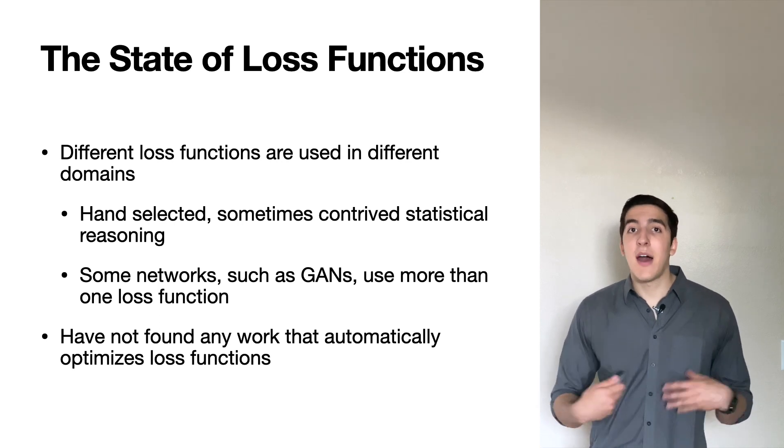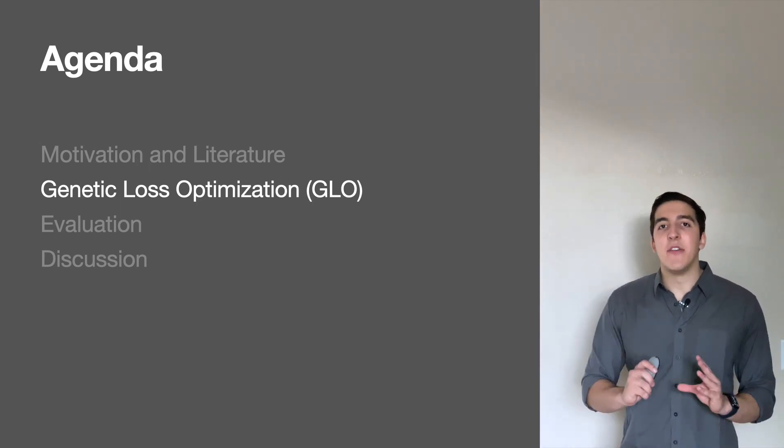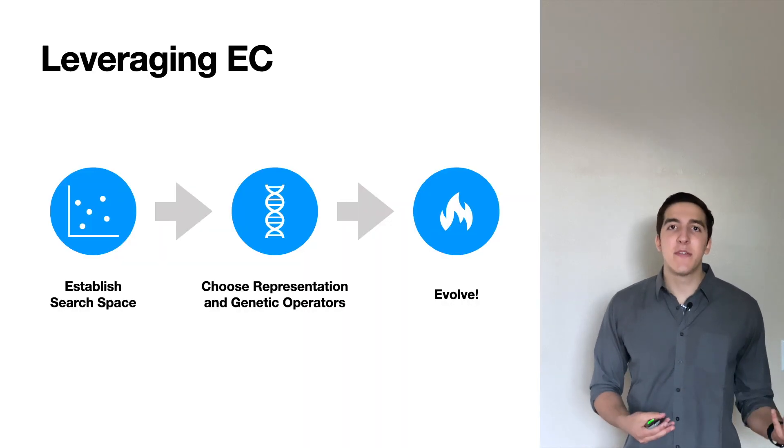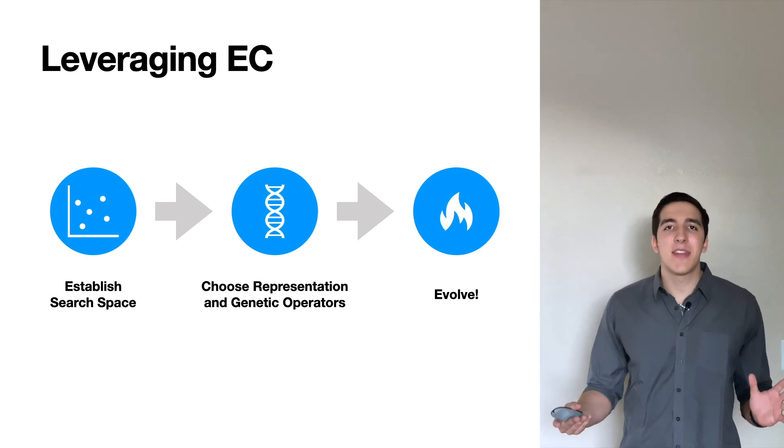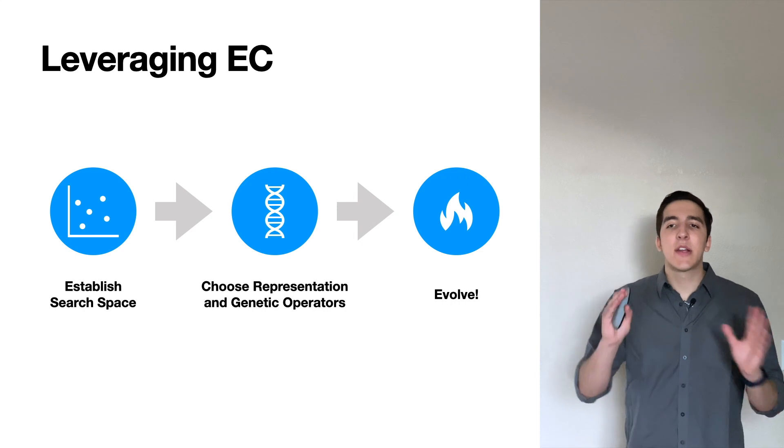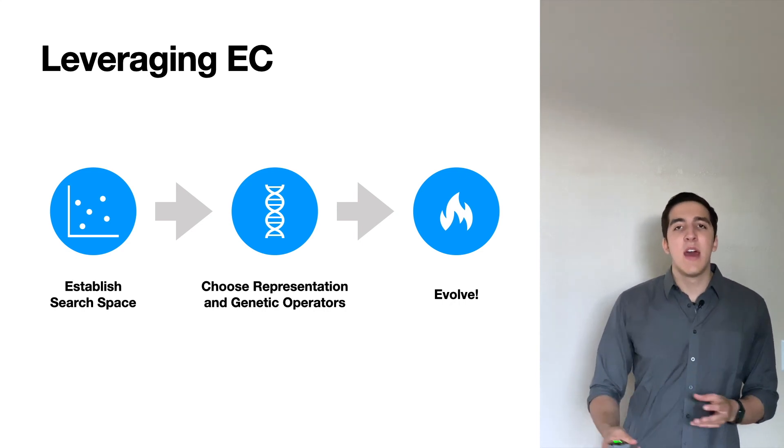As far as we know, we are the first people to do this. So how are we doing this? So now let's talk about GLOW, genetic loss optimization, our new technique. So we are leveraging EC, this is an EC conference after all, and we have these three main steps that everyone follows. We have to establish a search space, figure out our genetic representation, and some evolutionary operators, and then we can evolve.